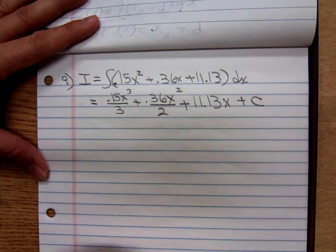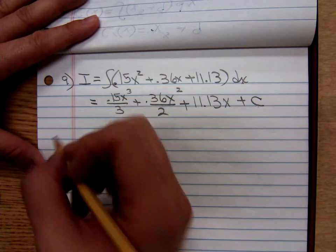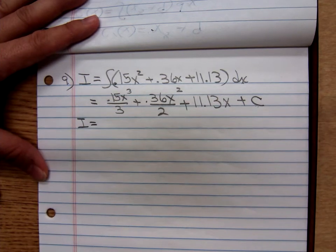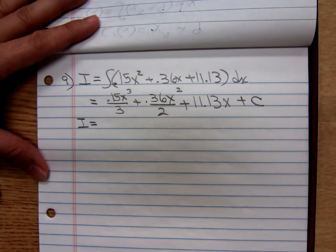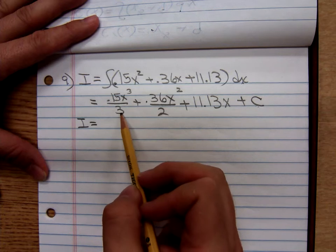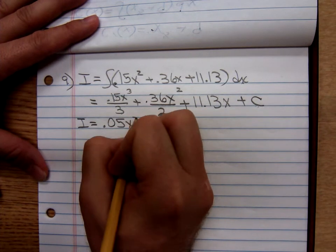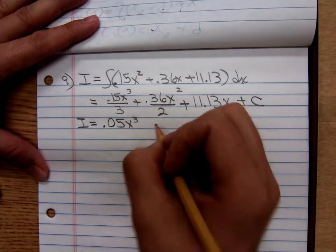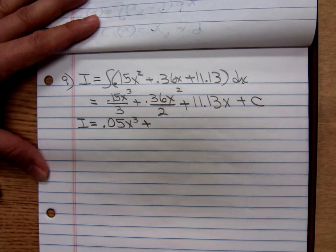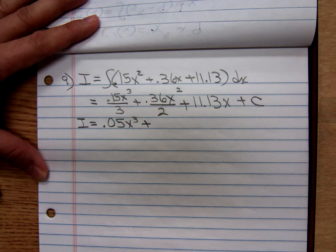At this point, this function cleans up pretty nicely. 0.15 divided by 3, that's 0.05x cubed, plus we have 0.36 divided by 2.